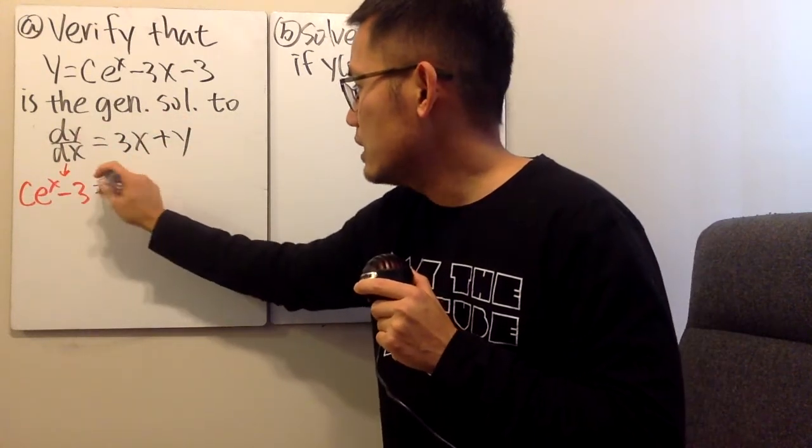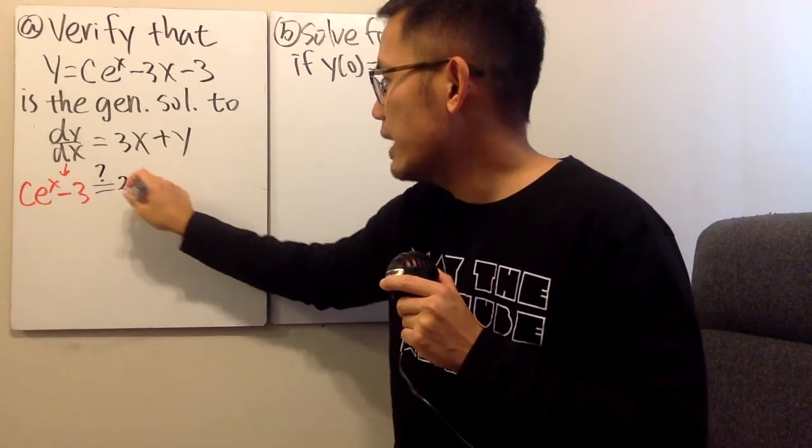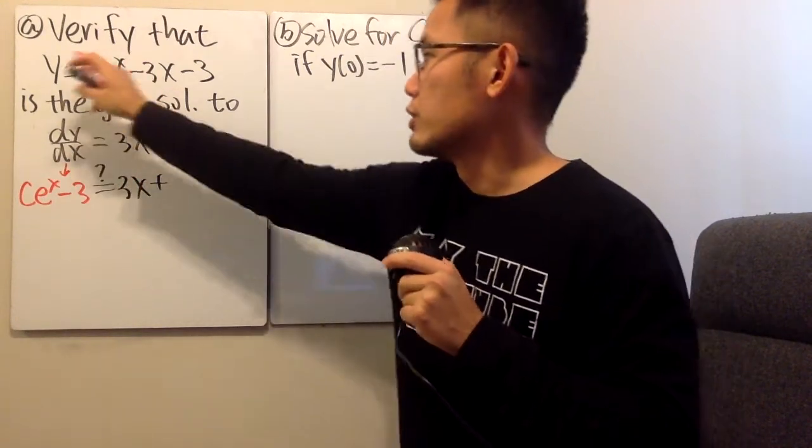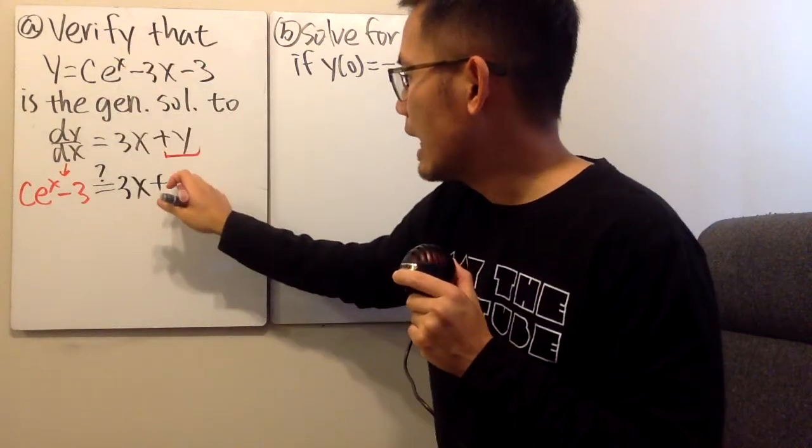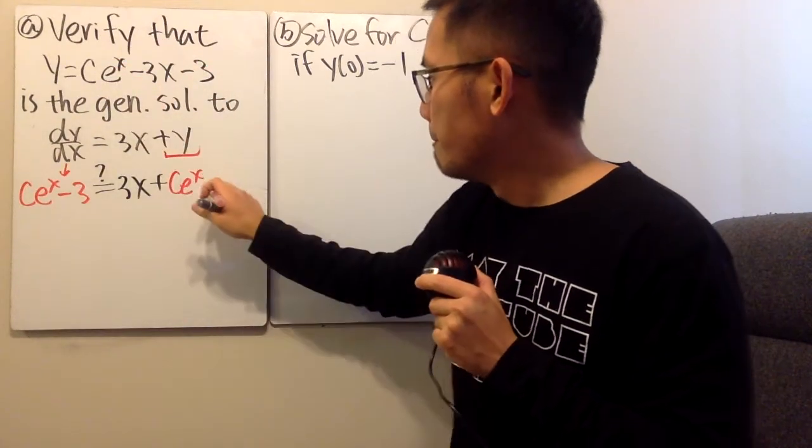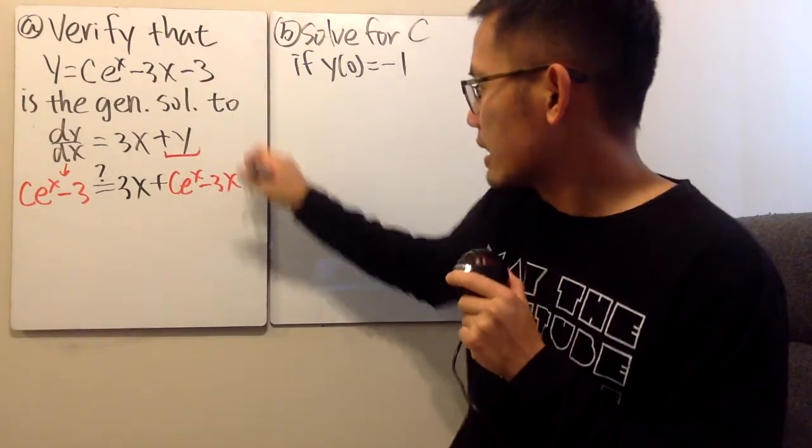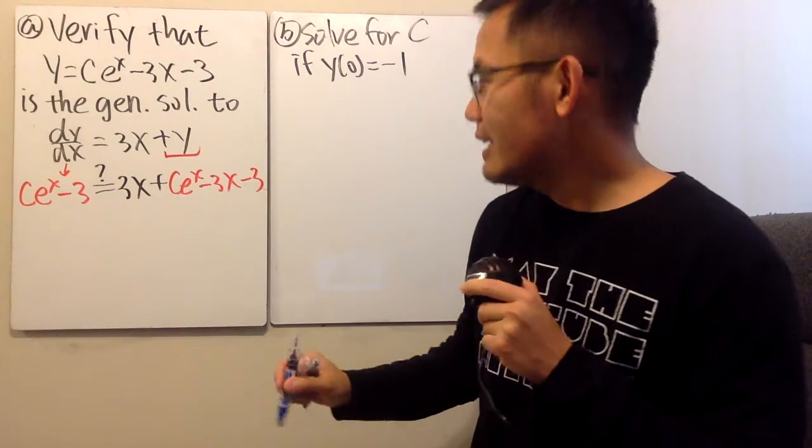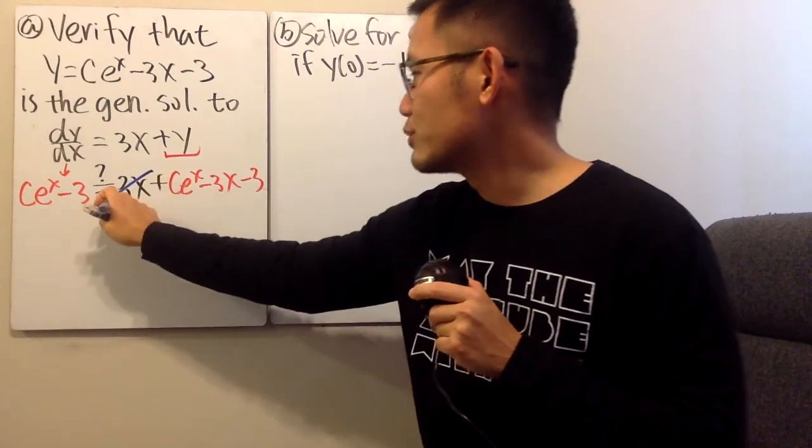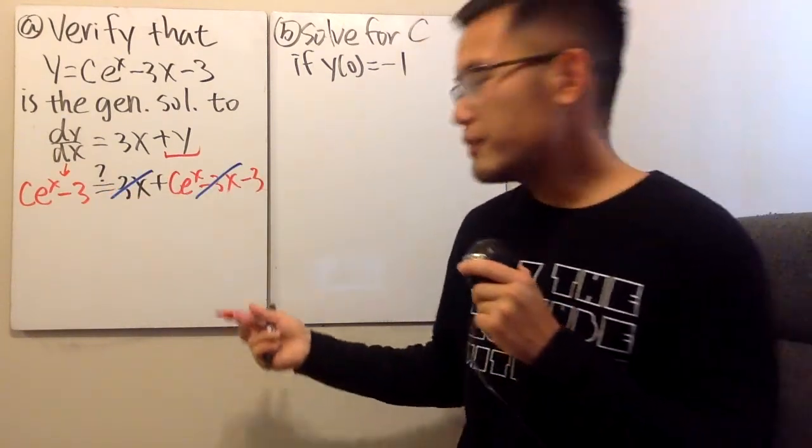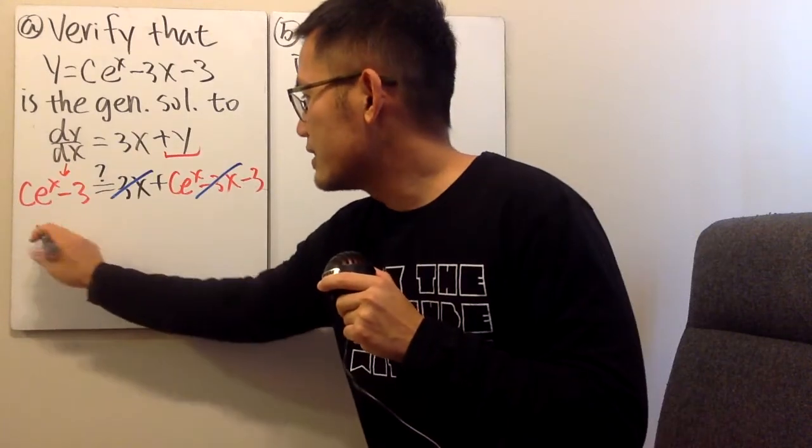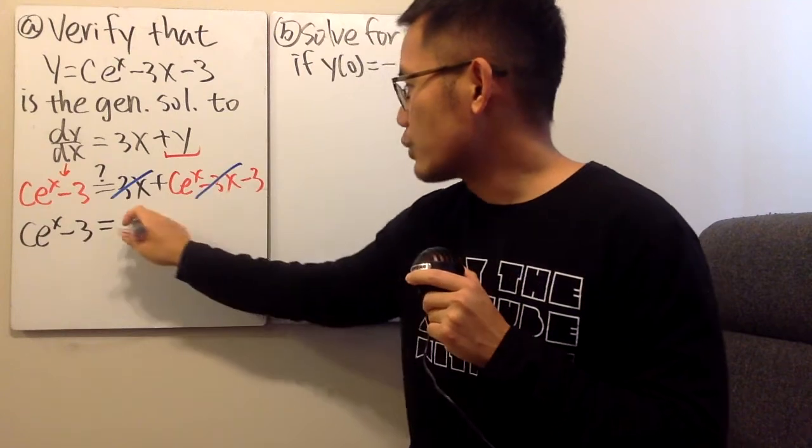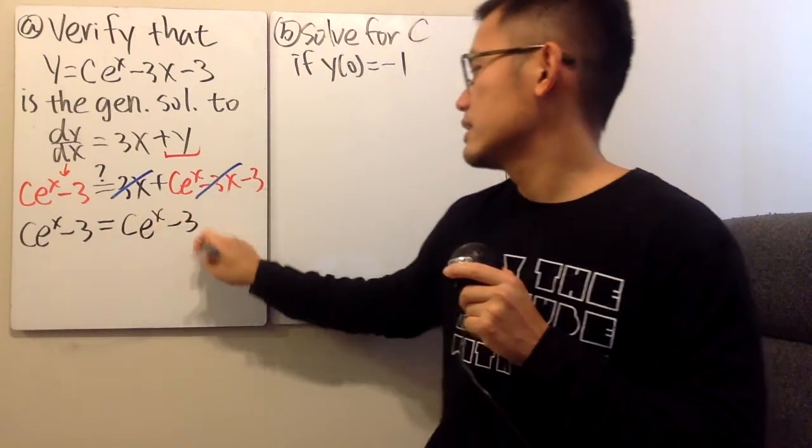Then we are going to see if this is equal to 3x plus y. Well, what's y? Just look back and then put it down. So here we have c e to the x minus 3x and then minus 3. Well, are they the same or not? Yes, they are. Because this right here is 3x, this right here is negative 3x. And of course, we can see that the left hand side is c e to the x minus 3. Likewise, the right hand side, isn't it? So it checks.